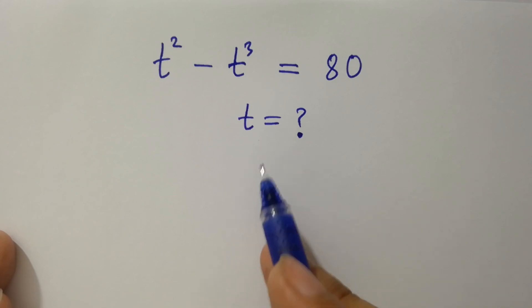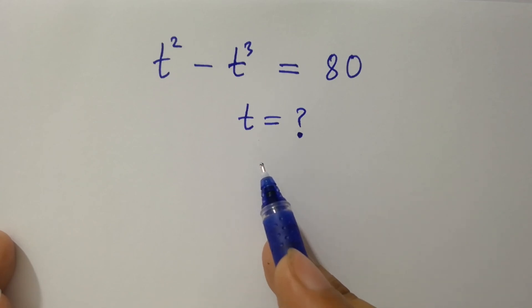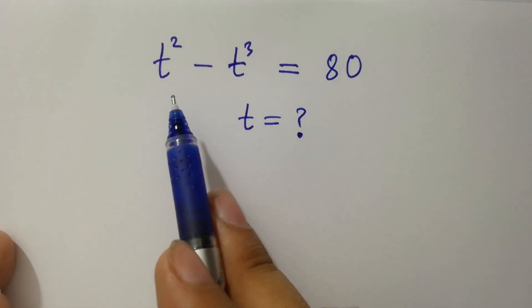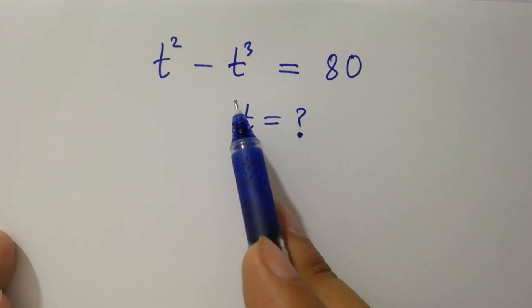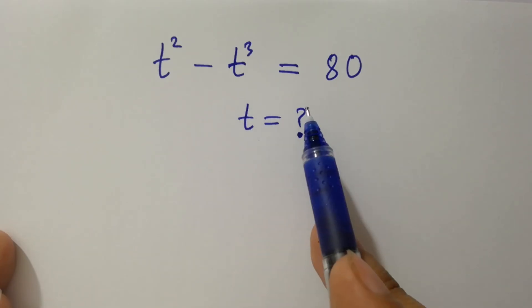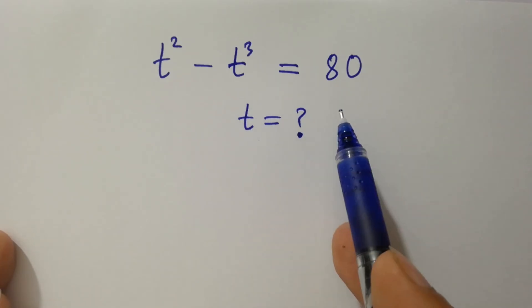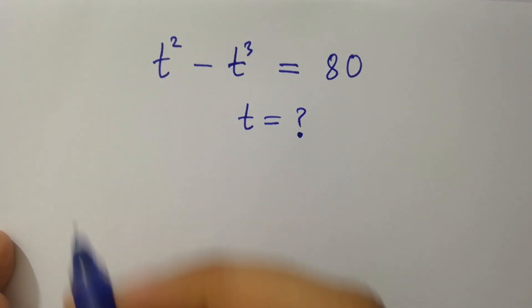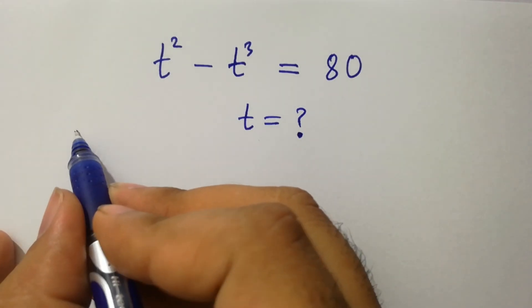Hello friends. Find the value of t if t squared minus t cubed equal to 80. Let's have a solution.